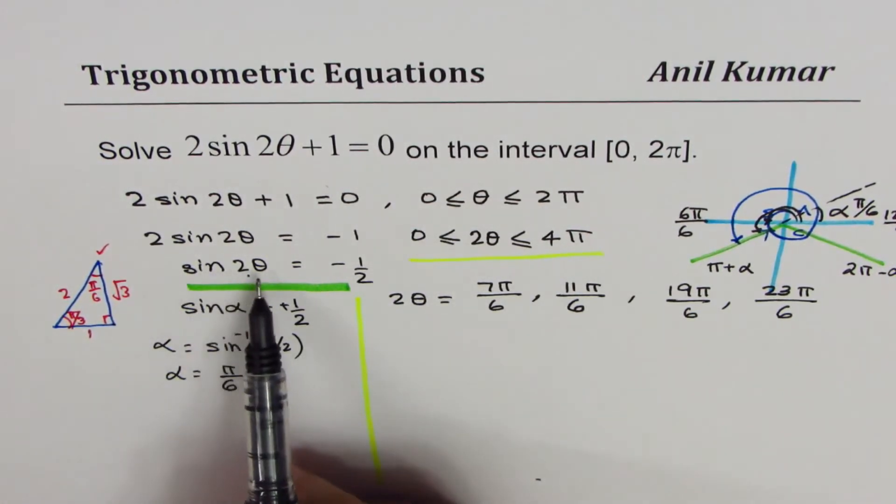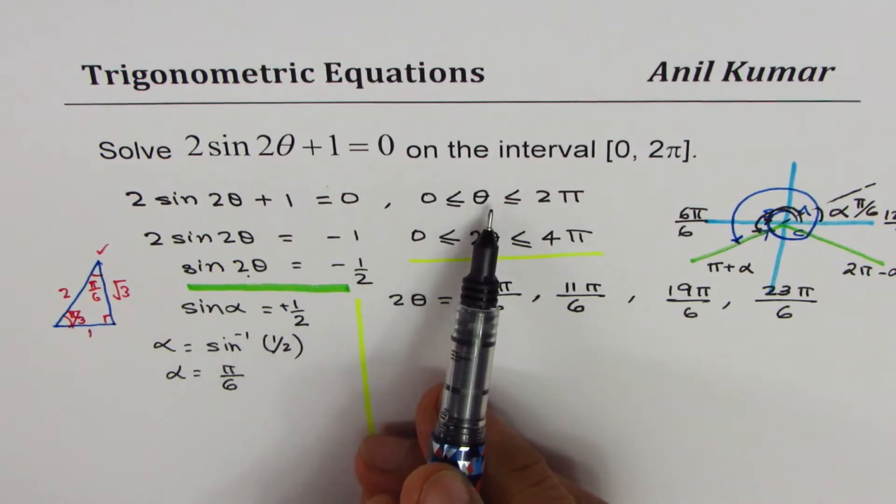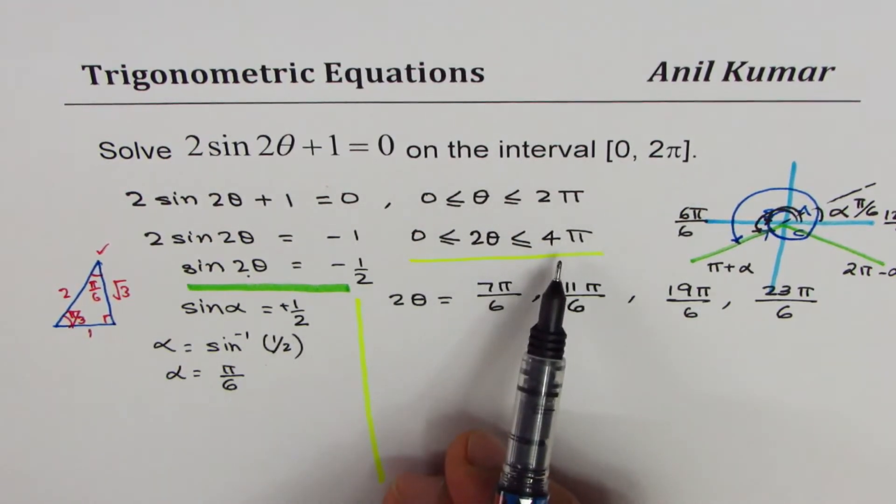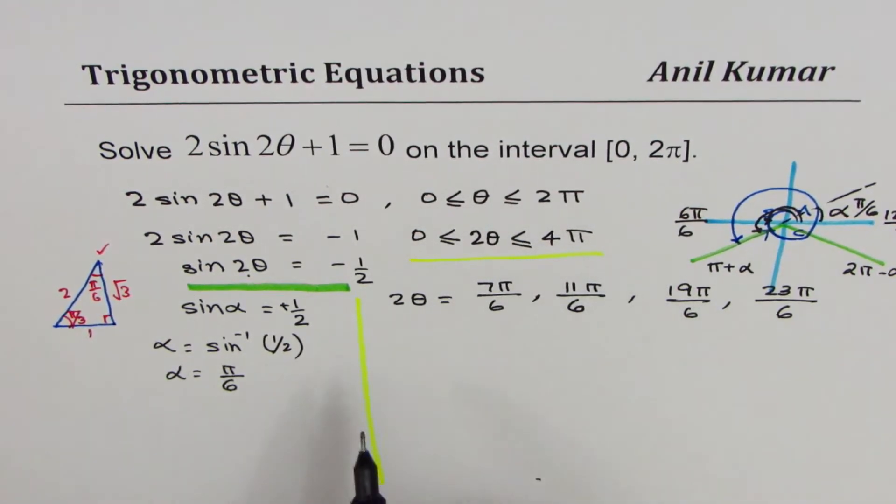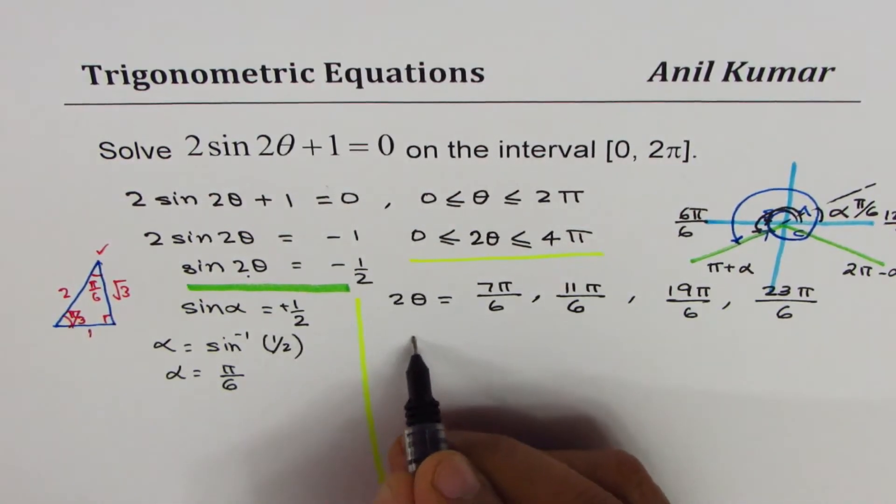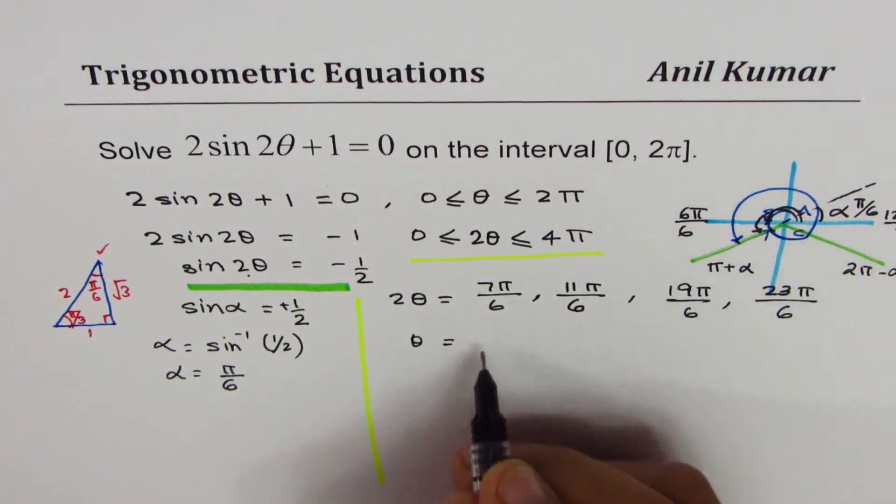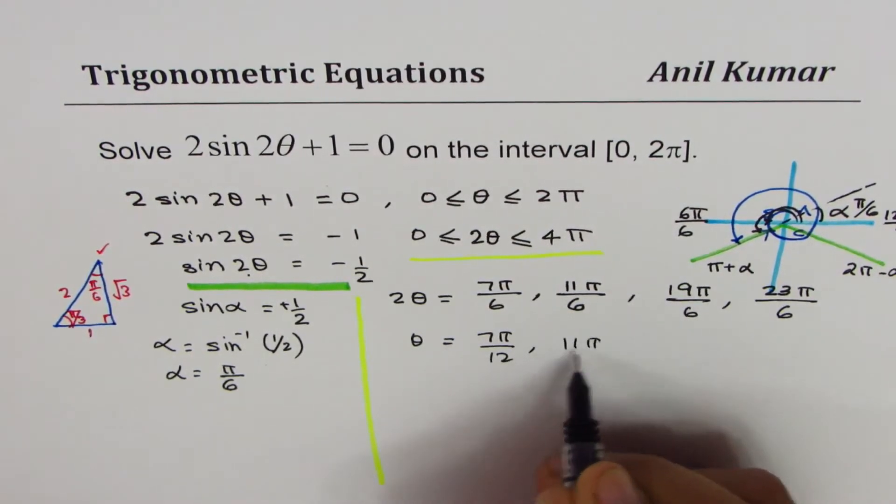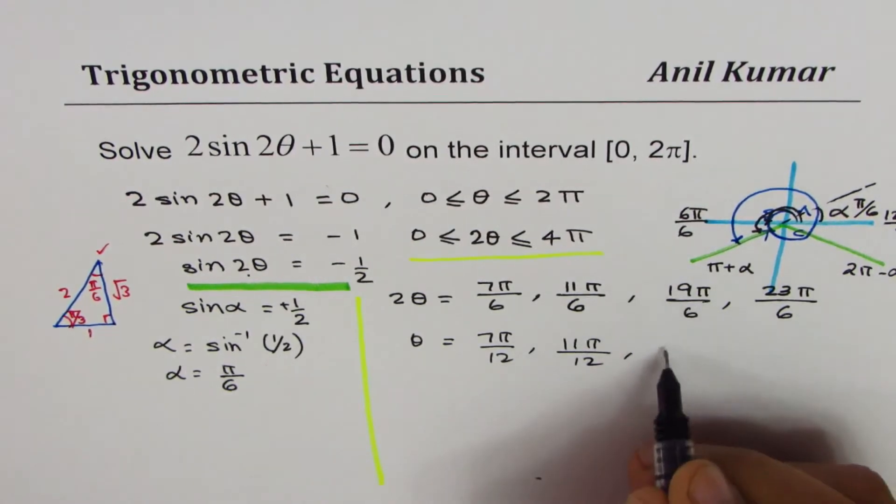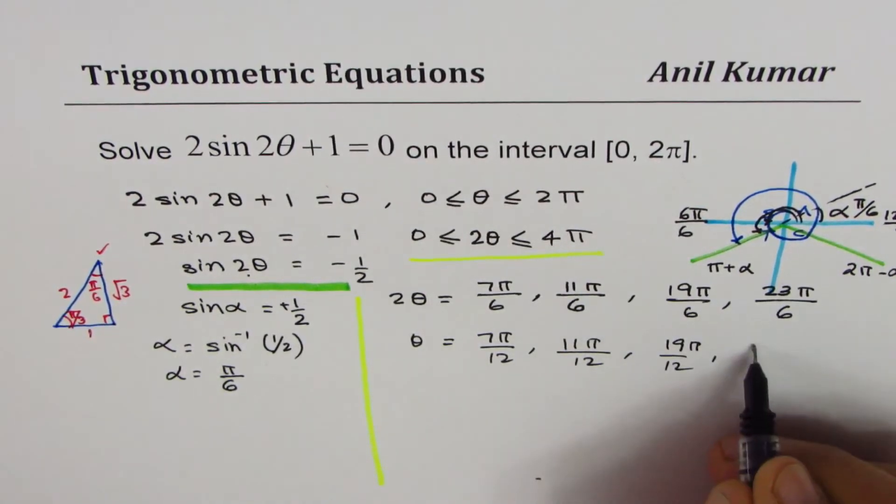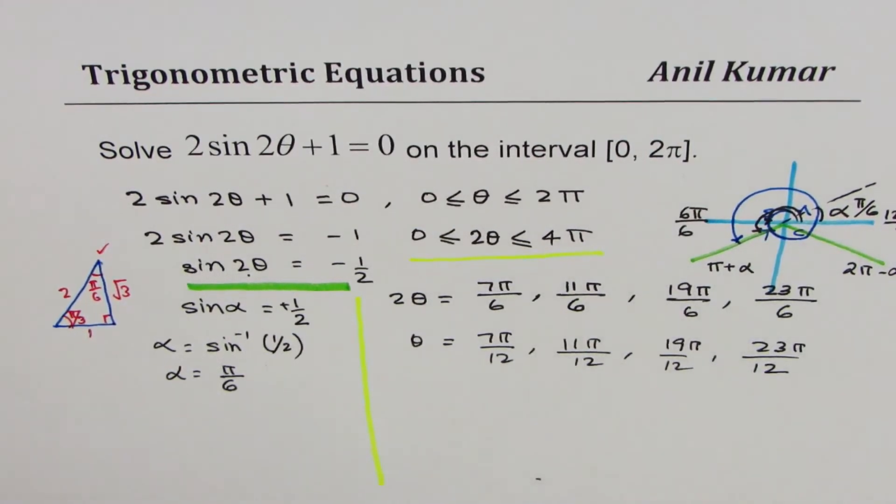That is critical to understand. Highlight this portion: if you have double angle, then the domain also changes, and accordingly we have to take or consider all the angles. So what is θ equal to? Dividing each by 2, we get 7π/12, 11π/12, 19π/12, and 23π/12. So these are the four answers for us.